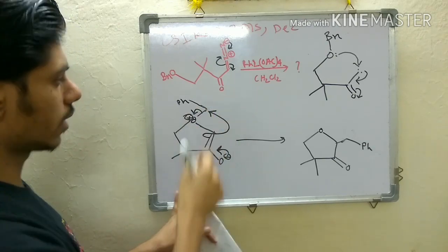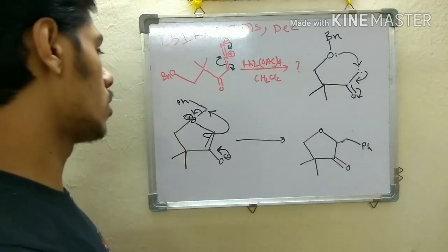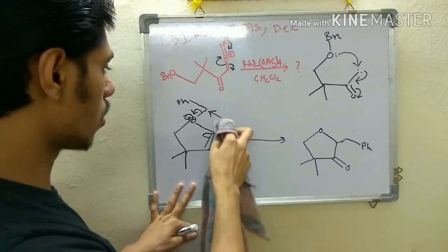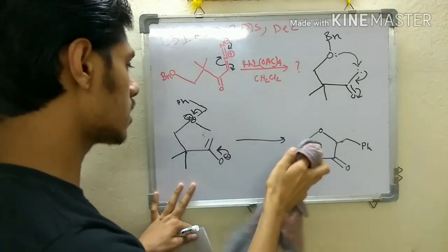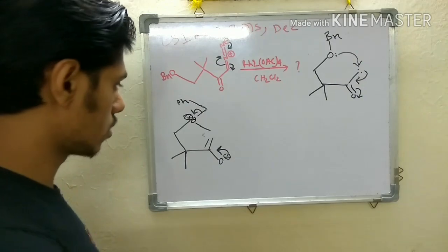The enolate and this is internal nucleophile. So it can attack here. It may be the case that this reaction can be intermolecular also.